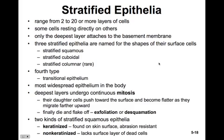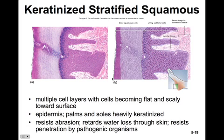There are two types of stratified squamous epithelia: keratinized and non-keratinized. The keratinized variety is found on skin surfaces and is very abrasion resistant. It has multiple cell layers with cells becoming flat and scaly towards the surface. The epidermis is a prime example, with the palms and soles of the feet being heavily keratinized. This epithelium resists abrasion, retards water loss, and resists penetration by pathogenic organisms.